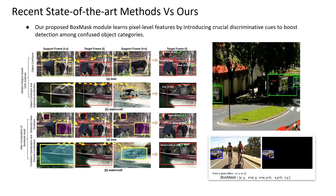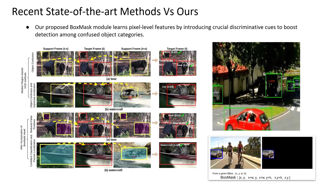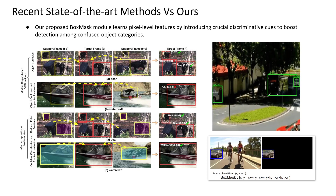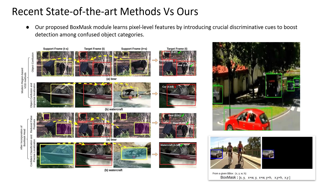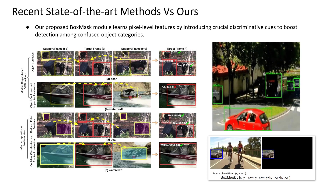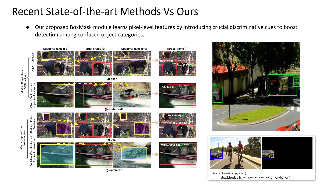In this paper, we observe that despite leveraging spatiotemporal information from support frames, recent methods often misclassify objects with similar appearance and uniform motion characteristics. To address this limitation, we devise a simple box mask module that learns pixel-level features by introducing crucial discriminative cues to boost detection among confused object categories.